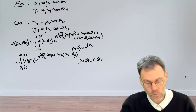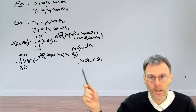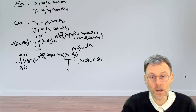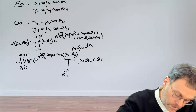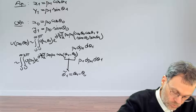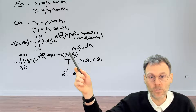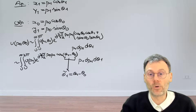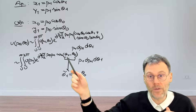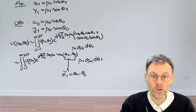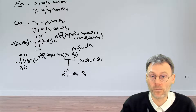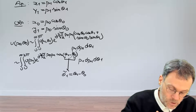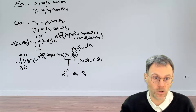Regarding the θ₀ dependence: one can substitute θ₁ − θ₀ as a new variable θ₁'. The bounds shift, but they remain 2π apart, and since we are integrating a periodic function over any 2π interval the result is the same. This shows that θ₀ plays no role, as expected for a circularly symmetric system.